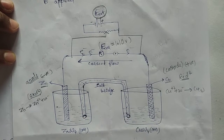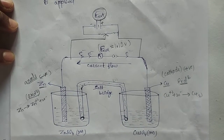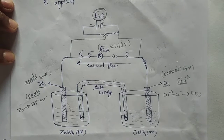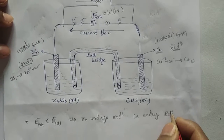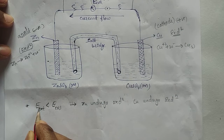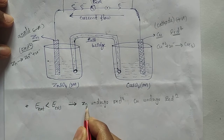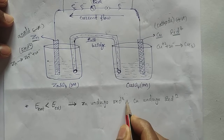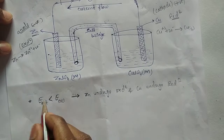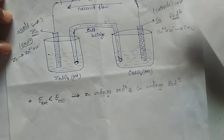In this case, the cell works as it is — that means it works in the same direction. Zinc undergoes oxidation and copper undergoes reduction. If the external opposing potential applied is less than the cell potential, the Daniel cell continues to work as before — zinc undergoes oxidation and copper undergoes reduction. There is no change because the external potential is less than the cell potential.